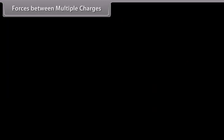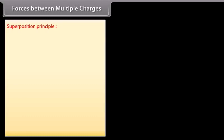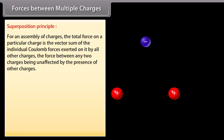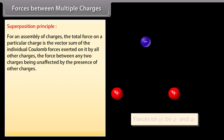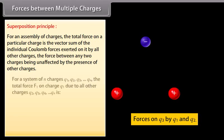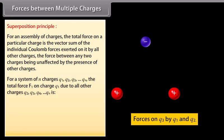Forces between multiple charges — Superposition principle: for an assembly of charges, the total force on a particular charge is the vector sum of the individual Coulomb forces exerted on it by all other charges, the force between any two charges being unaffected by the presence of other charges. For a system of n charges q1, q2, q3, ... qn, the total force F1 on charge q1 due to all other charges is F1 = F12 + F13 + F14 + ... + F1n.